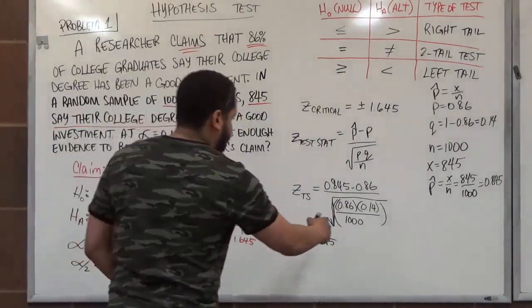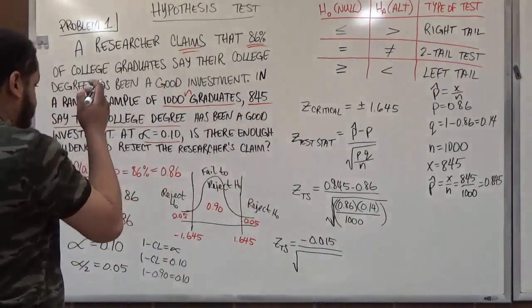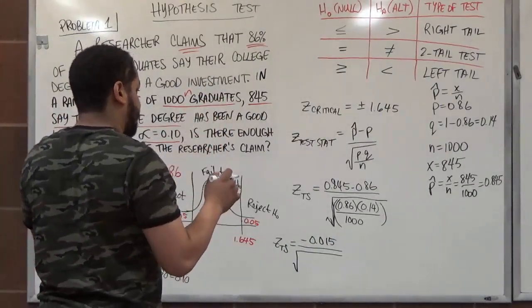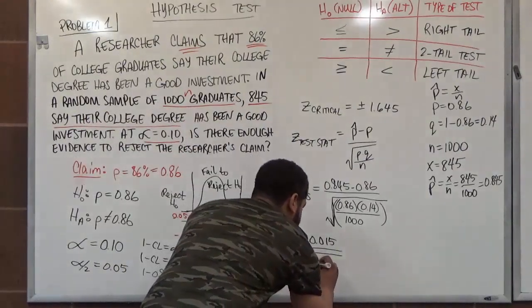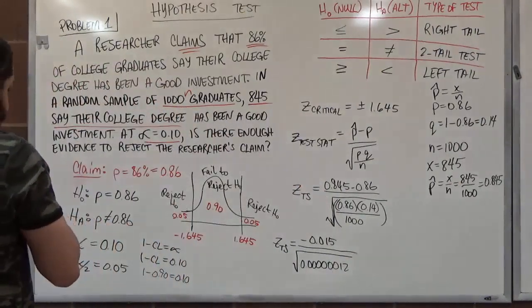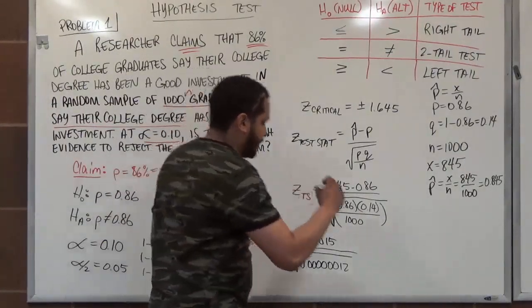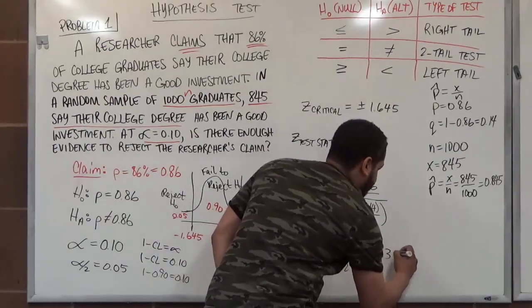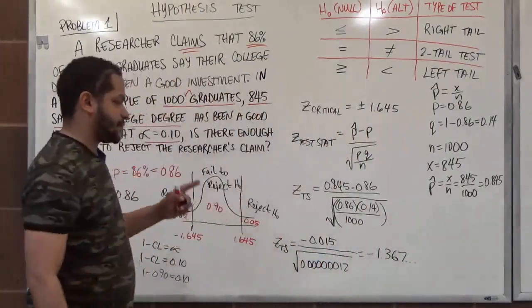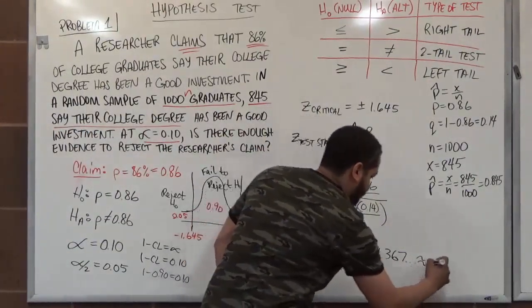So when we do this difference on top, we're going to get the z TS equals negative 0.015. After we get that value, we're going to do everything in here and leave it in the square root. And when we do that, we're doing 0.86 times 0.14, which is just about 0.0012, and we divide that by 1,000. We're going to get 0.00000012. And now when we take the square root of this, and while we're dividing, we divide this by this and the square root, we should get negative 1.36 and 7. We want to keep at least three decimal places when doing this, because we have to round this to the second position. When we round this, we get a z of negative 1.37.